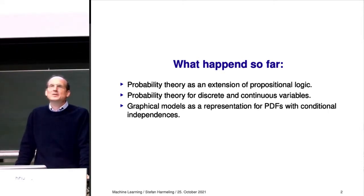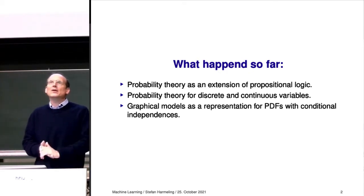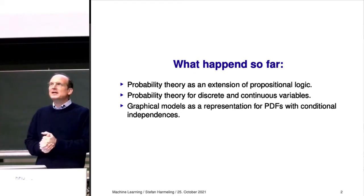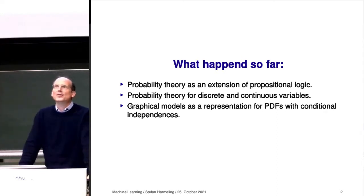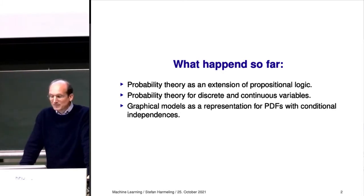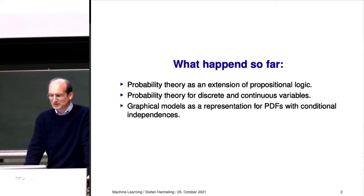With probabilities we are much more flexible. It turned out that probabilities are everywhere, and in a way deep learning — trying to learn neural networks — is basically assuming certain probability distributions on the data and then doing some estimation. Probability theory is the foundation for machine learning. We looked at discrete variables and also continuous variables, and I think it's fun that you can introduce it from the propositional logic side.